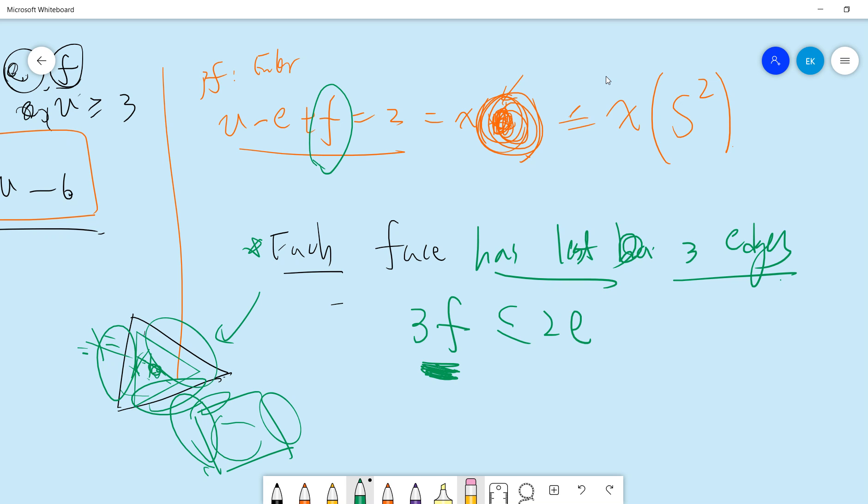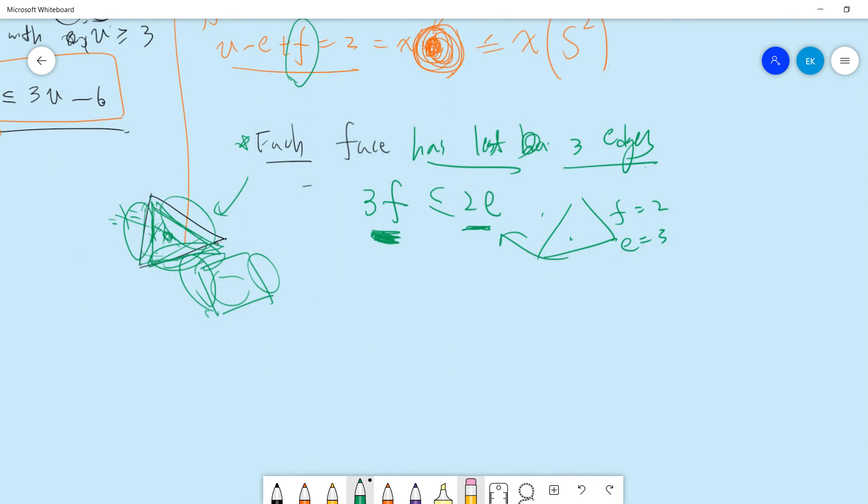So, since each face has at least three edges, right, so if you times three by these faces, you are less than 2E. This 2E, because we count these edges twice, right, so for example, if you see a triangle, then the number of faces is two, the number of edges is three, so you can check this is okay, this is indeed the case.